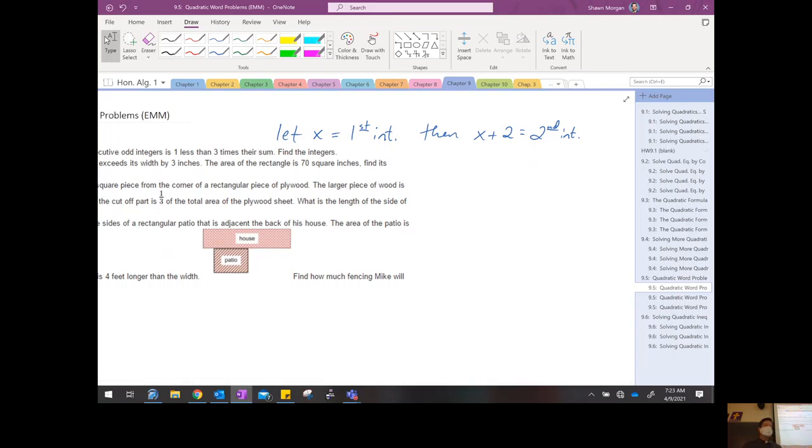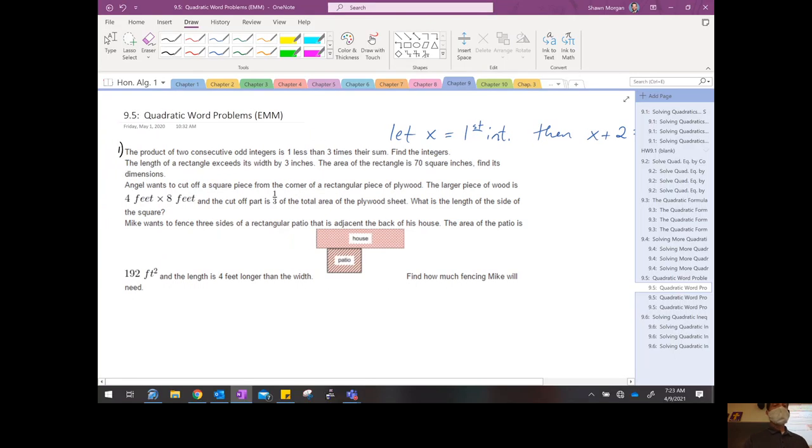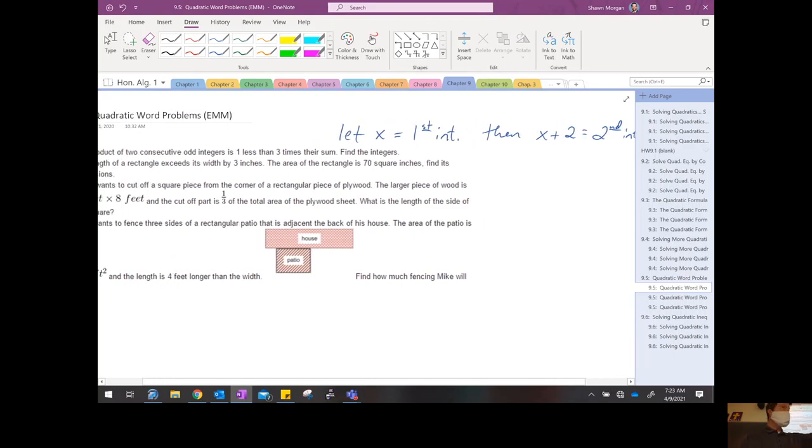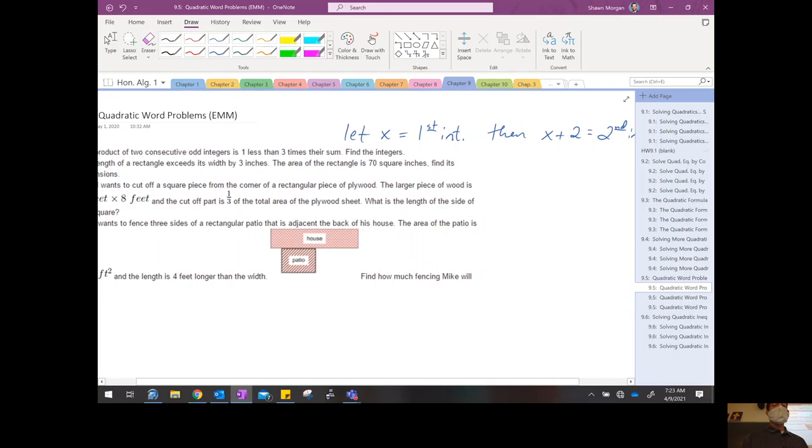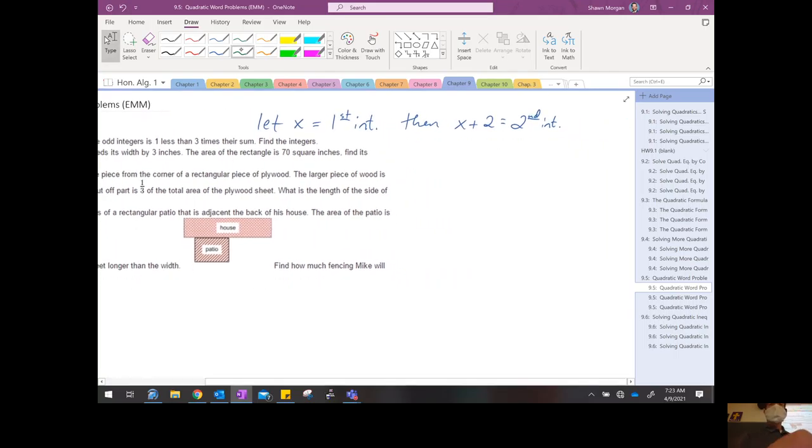And now it says that the product—okay, product means? Multiply. All right, so the product of these two is—is means? Equals. So we got x times x plus 2 equals, and then it says one less than. Does that mean one minus, or does that mean something minus one? Something minus one. What's one less than my height? That's my height minus one. What's one less than my age? That's my age minus one.